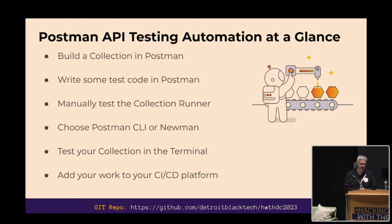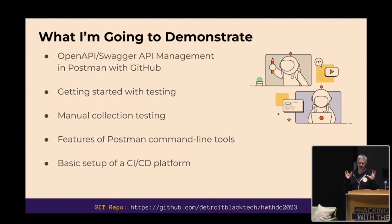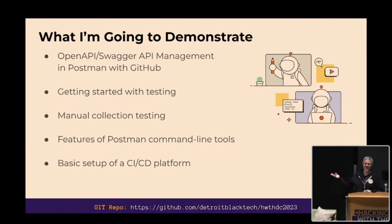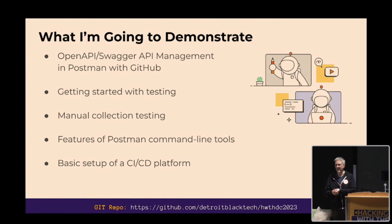Today I'm going to go through the Postman interface and some command line work. I built a dad joke generator API about a year ago — if you love dad jokes, hopefully you'll get a kick out of it. By the way, what's the best time of day to go see a dentist? 2:30. These are the kinds of jokes we're going to be seeing. I'll show you how I pull an OpenAPI or Swagger spec into Postman, start building a collection, add testing, use the command line tools, and get into CI/CD.